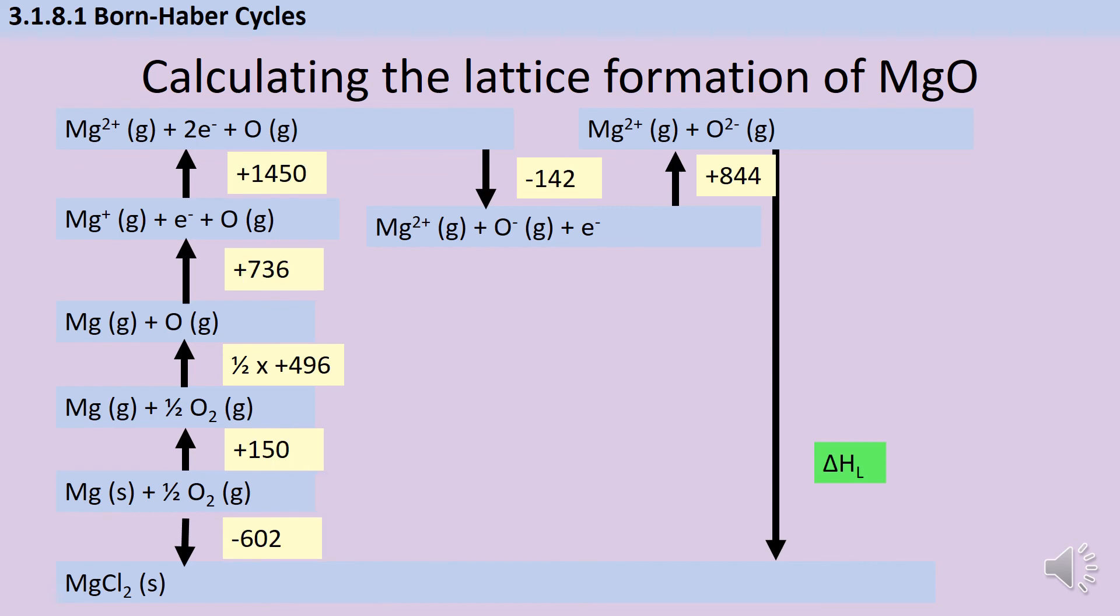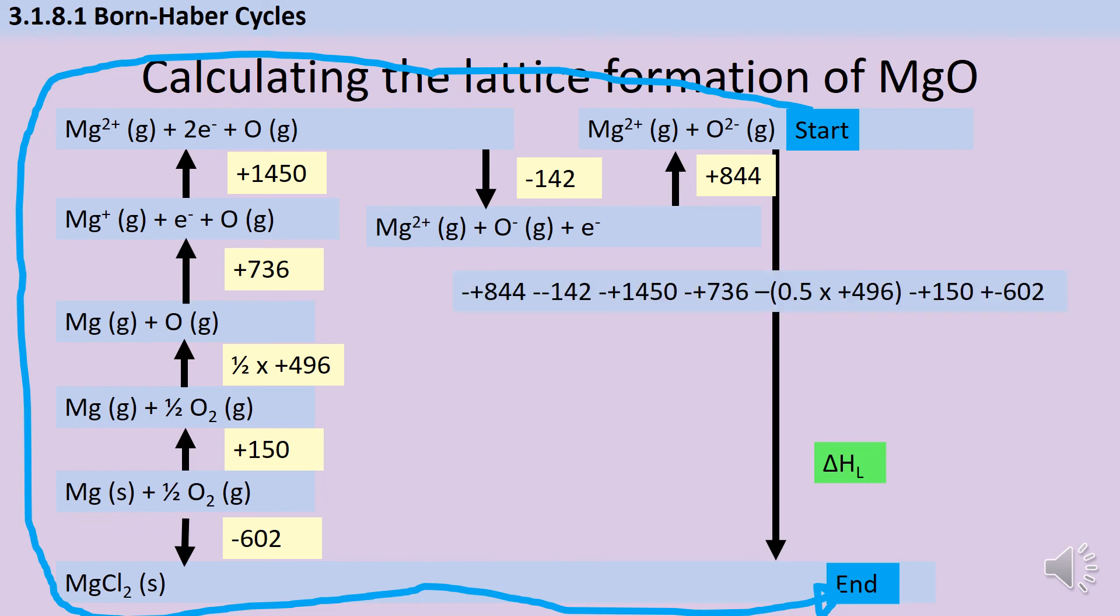Then everything else is pretty much the same. But as you can see, our second electron affinity, we have an upwards arrow to show that it's an endothermic process. So if we add some values to that, again, we can write start, we can write end, we do the arrow around, and then every arrow we're going the right way down, we just use as it is. And every arrow we're going the wrong way down, we're going to take the negative of. So all that together gives me a final value of minus 3,888 kilojoules per mole.